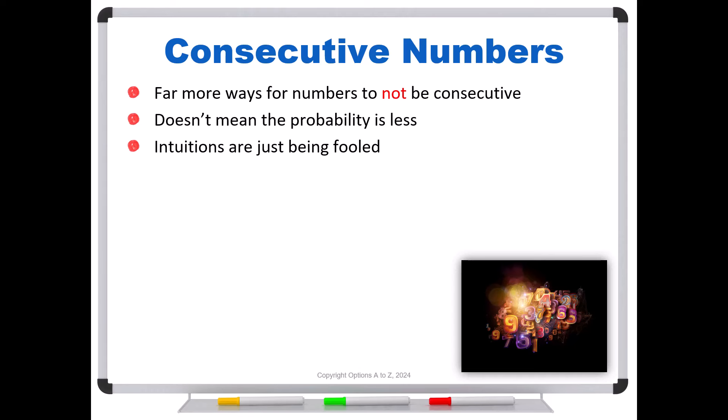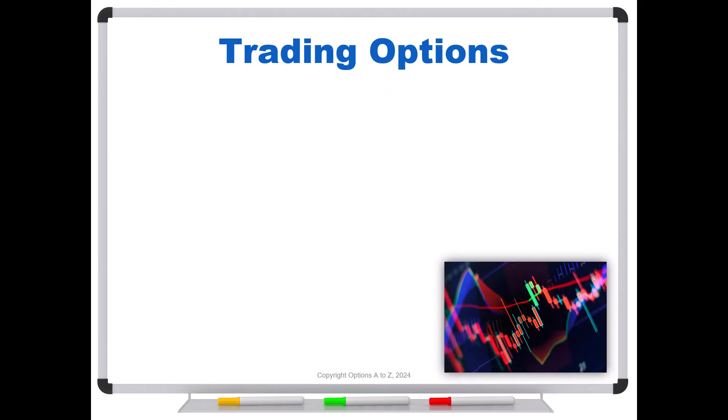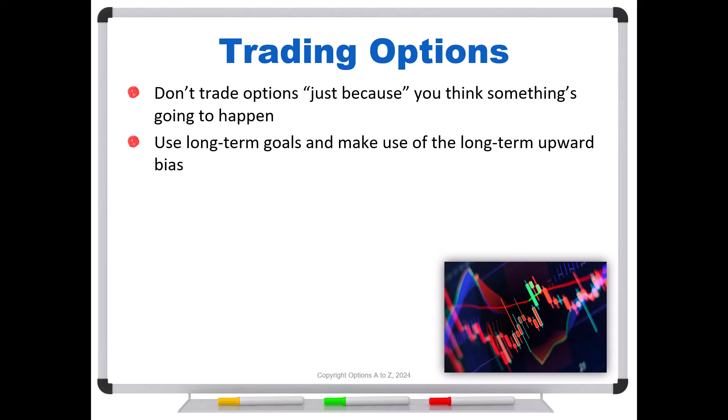So remember that when you are trading options, one key to take from this is don't trade options just because you think something's going to happen. Instead, use long-term goals and make use of the long-term upward bias. And most important, understand your hedging, rolling, and morphing to hedge unwanted risks. Because no matter how sure you are that something's going to happen, chances are your intuitions are wrong.